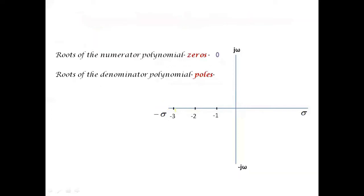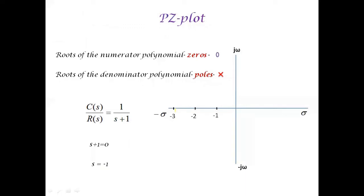Let me do a different example for a pole-zero plot, in which the transfer function C(s)/R(s) is given by 1/(s+1). Equating the denominator to zero, s+1=0, hence s=−1. As it is the root of the denominator polynomial, I can call it a pole. I can plot the pole on the negative real axis of the s-plane. So we have one pole for this example.